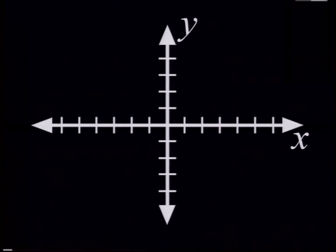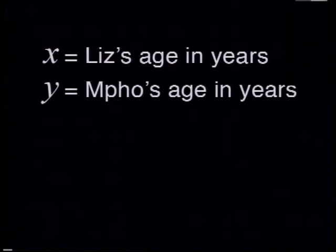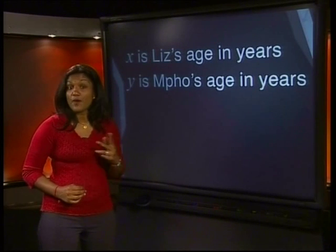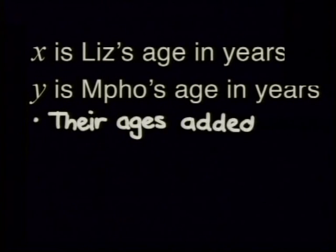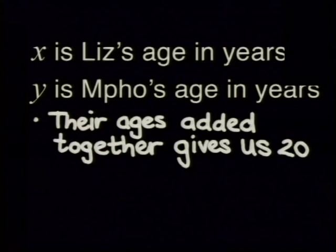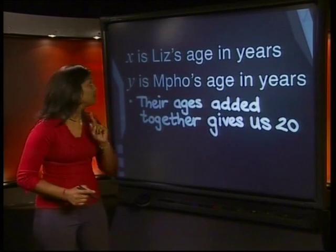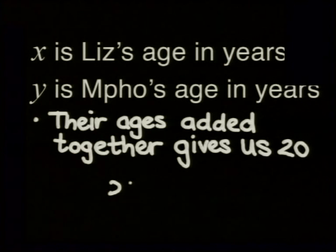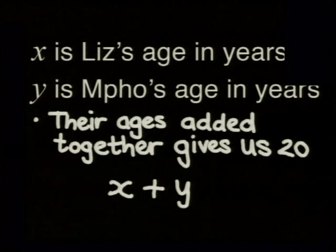Because we usually use an X axis and a Y axis on the Cartesian plane, let's use the unknowns X and Y. Let X represent Liz's age in years and let Y represent Mpo's age in years. It often helps to write the information in words first so you can set up a formula. Their ages added together gives us 20, so the sum of the girls' ages is 20. That means X plus Y is equal to 20.